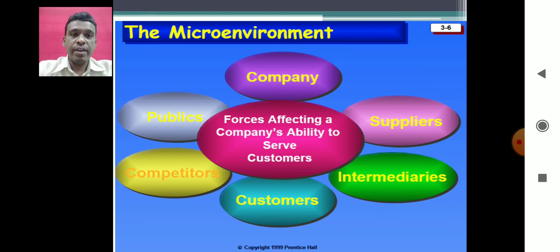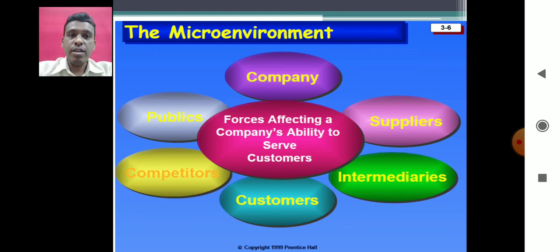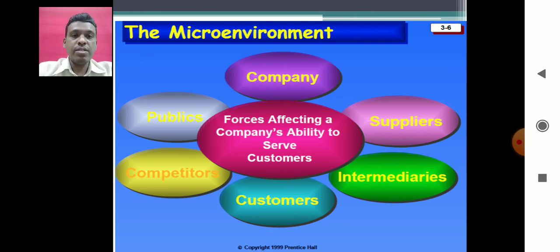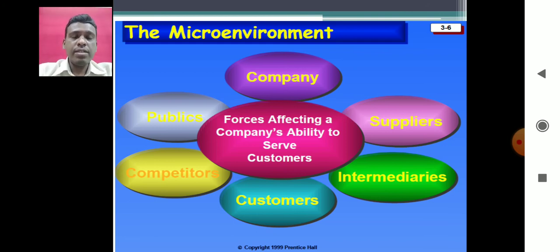So what are the factors that affect the company's ability to serve its customers? They are: the company itself, that is the factors within the company; suppliers; intermediaries; customers; competitors; and publics. These are the six main factors that affect a company's ability to transact with its customers. Let us see them one by one.